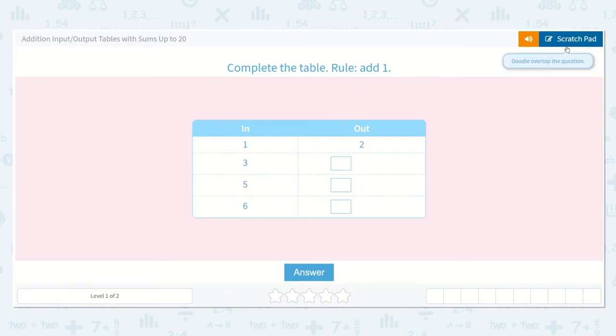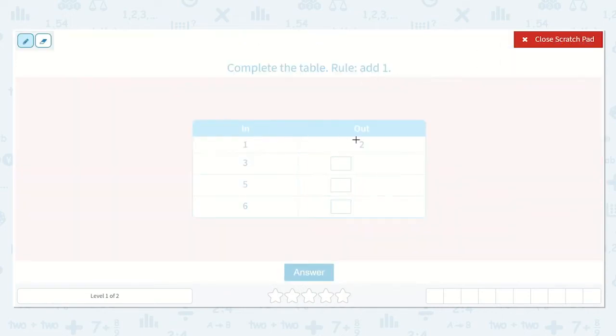So I can see that we are adding one to this first number. Our number on the in side of our table will be our starting number, and then we will add one, and the number across from it will be the result. So one, and then we add one, and that turns into two. Three, add one, and that turns into four.